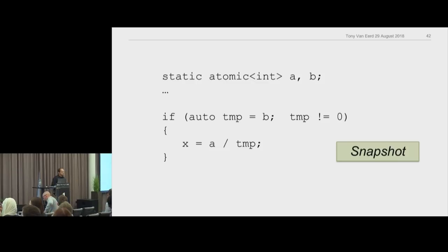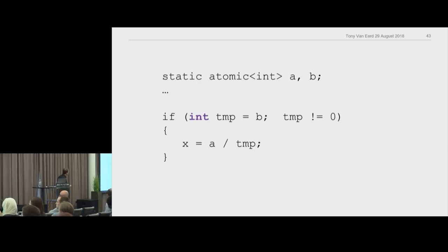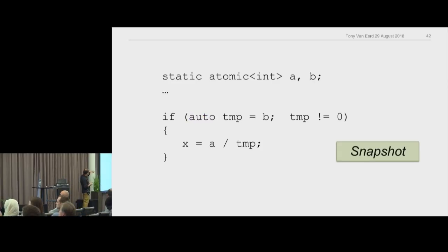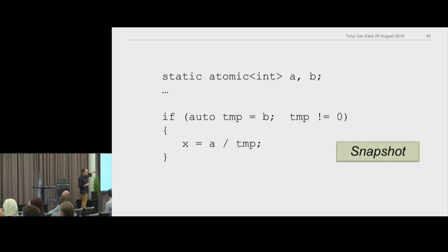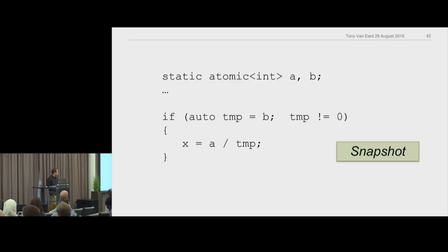That `auto` there doesn't even compile — anyone know why? Atomics don't have copy constructors, because you don't want temp to be another atomic. You just want the integer value — a local variable doesn't need to be atomic, and it would be slower. You want the value inside B, not an actual copy of B.